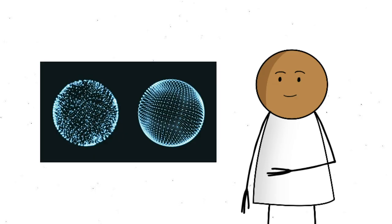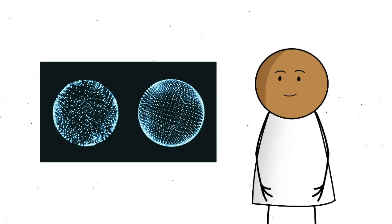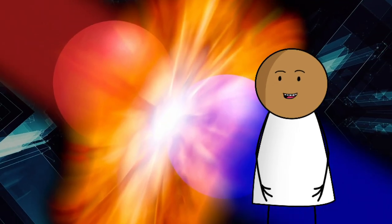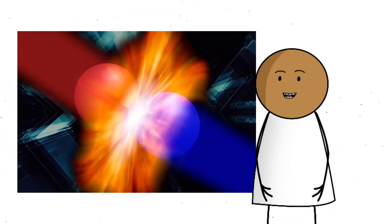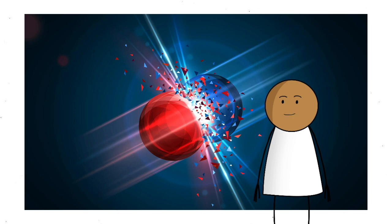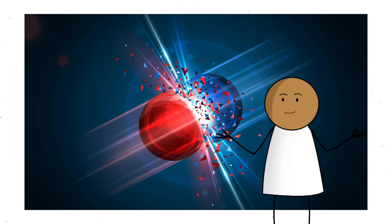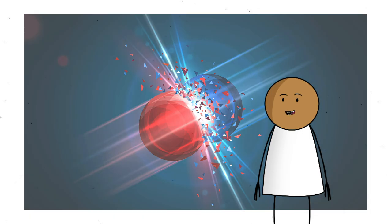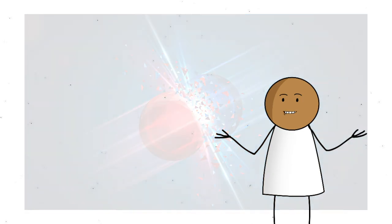The thing is, every time matter is created, antimatter is supposed to show up too. It's evil twin with the opposite charge. Same mass, same shape, but ready to annihilate its partner on contact. When the universe began with the big bang, it should've created equal parts of both. And if that had happened? Boom. Total annihilation. No stars, no planets, no galaxies. No awkward first dates. Just nothing.